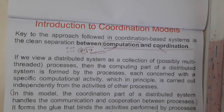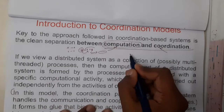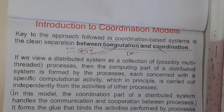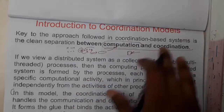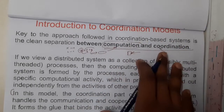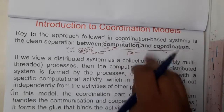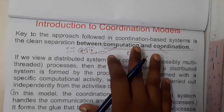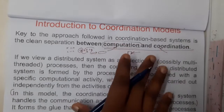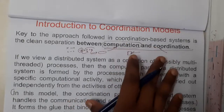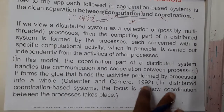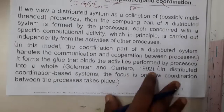Coordination is nothing but a few people combining and doing something together. Take the example of your major project or mini project done in a group — among your team you coordinate and complete the project. The same thing is done by systems or components here, and that is nothing but a coordination-based system.